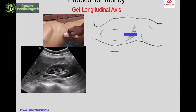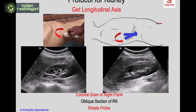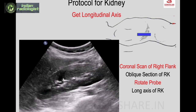To get the longitudinal axis of the kidney: when you attempt a coronal scan you initially get an oblique scan of the kidney. From there you rotate or swivel the probe to get the long axis of the kidney. If you swivel too far it becomes oblique again, so you come back to the longest axis. This is demonstrated in the video — oblique, then swivel to get the long axis.